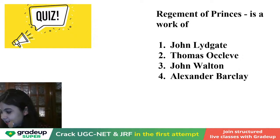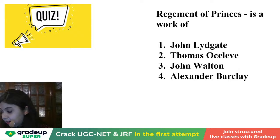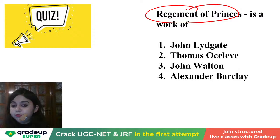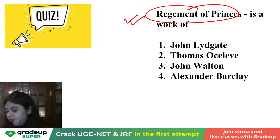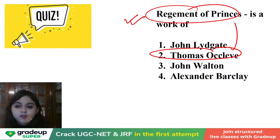The Regiment of Princes is a work of — this is one of your English Chaucerians. Thomas Hoccleve is the writer of Regiment of Princes. Thomas Hoccleve is a writer of Regiment of Princes. Which of the following poets wrote a famous poem mourning the death of Chaucer? This is a kind of elegy written on the death of Chaucer — a favorite question for HP SET exams, they keep giving this question every now and then.